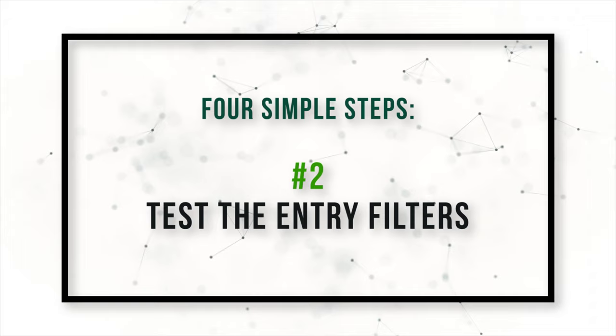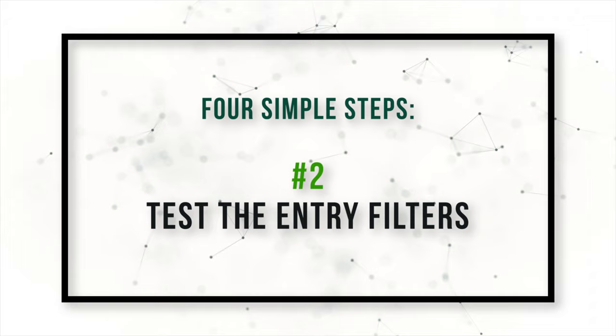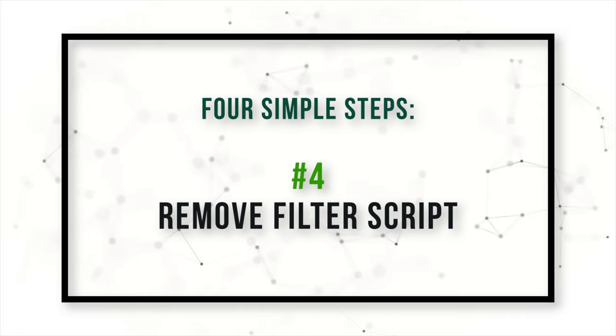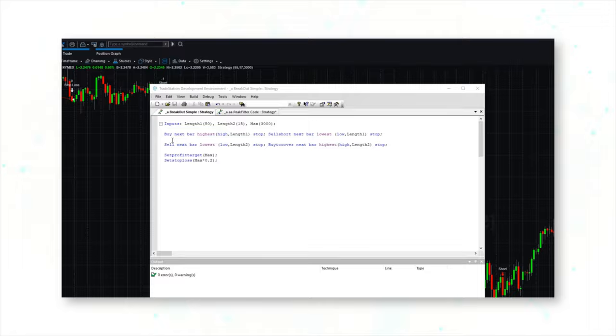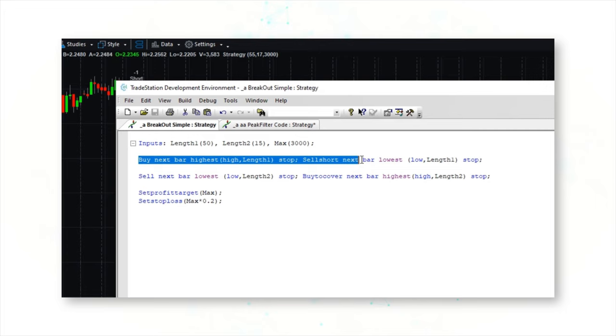Now let's look at a practical example for the heating oil market, where we can take a good breakout trading system and turn it into a great one. There are four simple steps: first, add the peak filter script to our strategy; next, test the entry filters; then permanently move the filters into our strategy; and finally, remove the filter script we added earlier. Let's jump into TradeStation and look at a simple breakout strategy for the heating oil market on 240-minute bars.